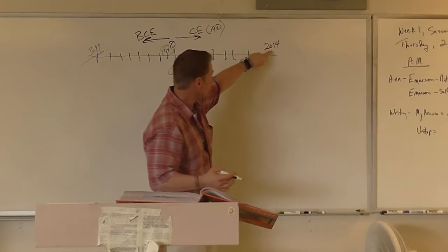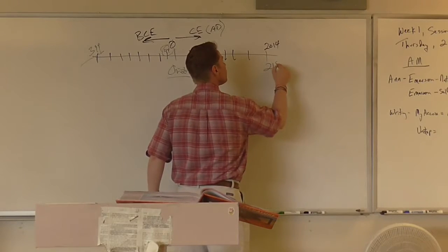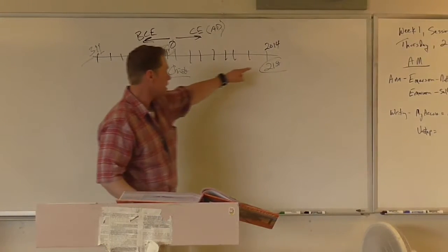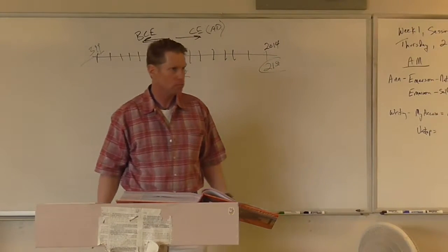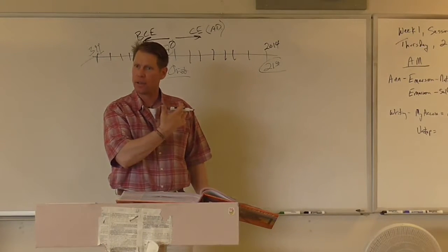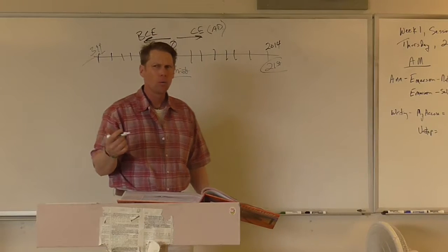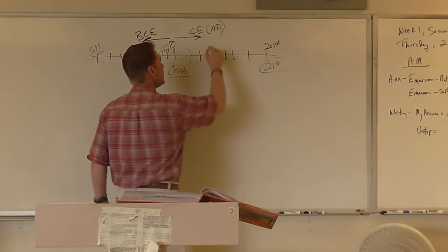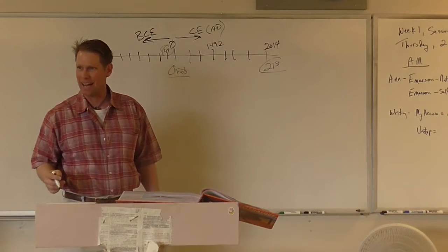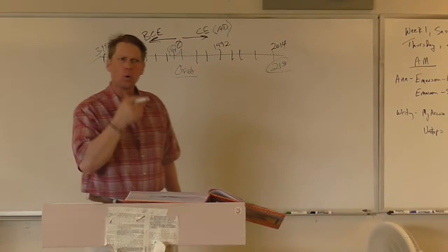Then we hit zero and start counting up. Right now we are in 2014 and we call this the 21st century — written with a 21, ST, and a large C to designate century. Columbus sailed the ocean blue in 1492. Write that date down. What century is that?